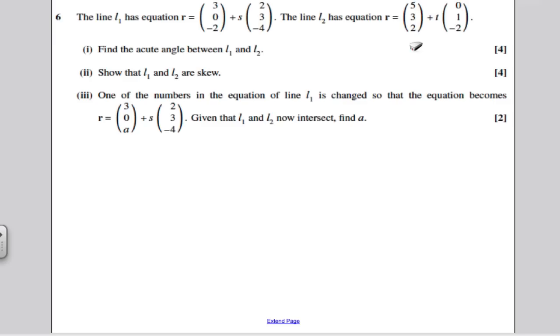Last part then, one of the numbers in L1 is changed so that the equation becomes the following. So basically, what have we done here? We've just changed that number, the starting position vector, from minus 2 in the k component to A. It is given that L1 and L2 now intersect, find A.